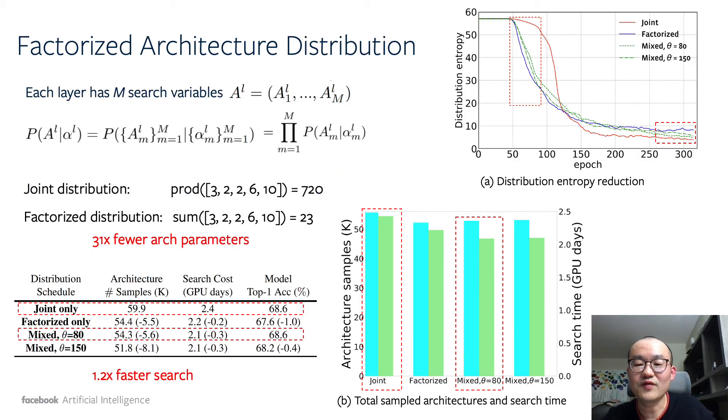Next, we find the search space often has multiple variables such as kernel size, channel number, activation functions. In such multivariate search space, we propose to factorize the distribution of the model architecture at each layer.